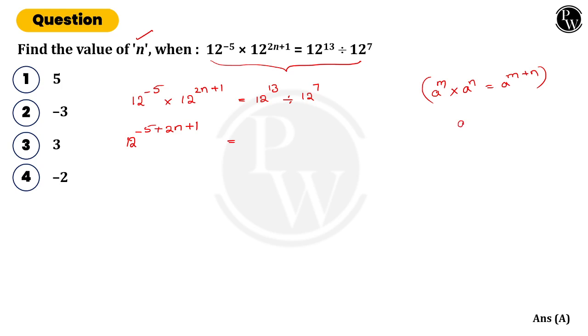from the RH side, you need to apply a power m divided by a power n, that is equal to a power m minus n. So 12 to the power of 13 minus 7.